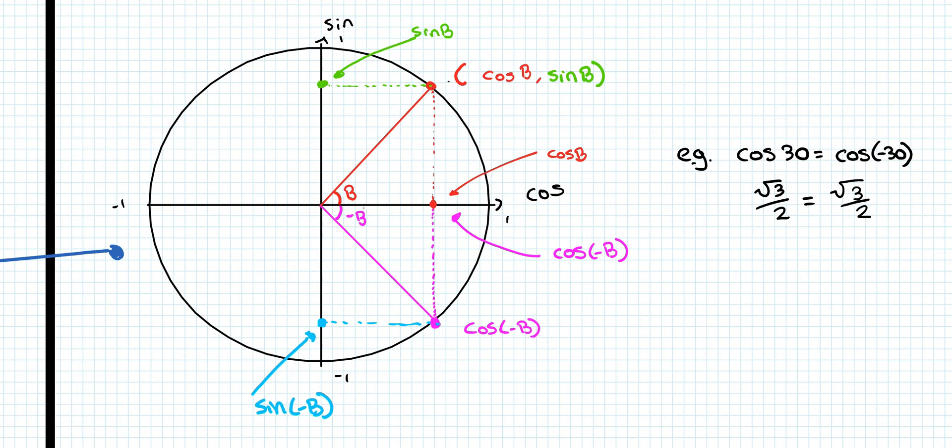And looking at the sin(-B), it'll be down here. So this point is sin(-B). Where are the coordinates for that point? And I'll put a little bracket around that. So it's written as a point.